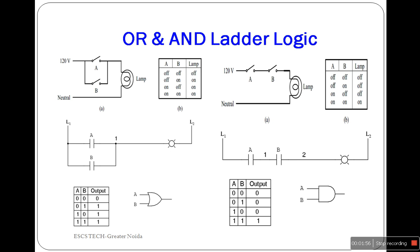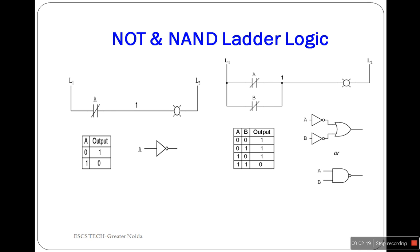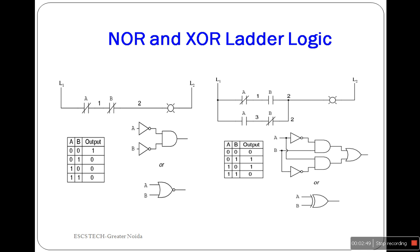A truth table is used to show all the possible combinations for a given logic function. AND logic is similar to a series circuit, and OR logic is similar to a parallel circuit. Here, A and B normally open relays are used as control inputs. NOT logic allows current to pass anytime an input is not true, using normally closed relays for A and B. In the same way, we can check NOR and XOR logic.